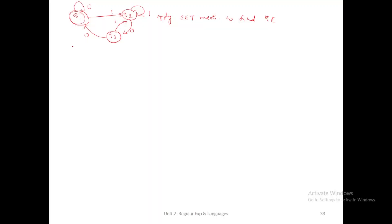In today's session, I am going to discuss additional problems for conversion of DFA to regular expression using the state elimination technique. The state elimination technique is used to reduce intermediate states between the source node and destination node, with the formula Rij plus Qi into S-star Pj for path value prediction. There are two cases: Case 1 for when source and destination nodes are different, and Case 2 when they are the same.